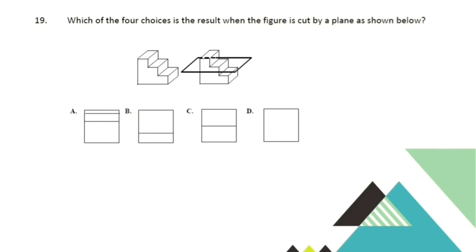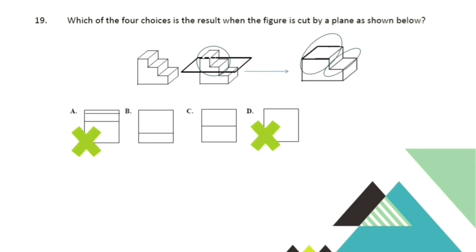Which of the following choices is the result when the figure is cut by a plane as shown? This is a perspective and cutting problem in one. The first thing you have to do is imagine the outcome after cutting the figure. Looking from the top, we should see two layers. Letters B and C have two shapes, so the answer is either C or B. Looking closely, the two rectangular shapes in letter C have the same size, but in our figure the rectangles should not be equal — one should be twice larger, taking up two-thirds of the whole shape. So the answer is letter B.